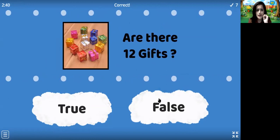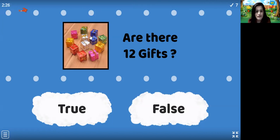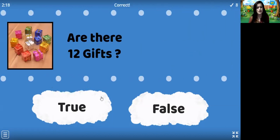Are there 12 gifts? Come on, the gifts are so small — let's keep counting, be careful. We are starting from the pink color. 1, 2, 3, 4, 5, 6, 7, 8, 9, 10, 11, 12. I got 12 gifts. Yes, it's true!